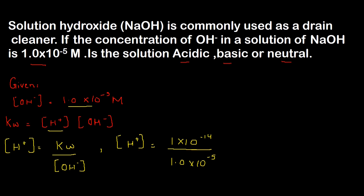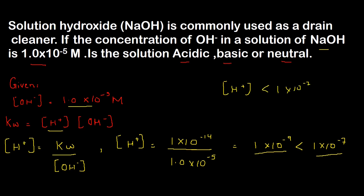Hydrogen ion ki concentration aati hai 1×10⁻⁹ molar. Yahaan par yeh value less hai as compared to 1×10⁻⁷. Sodium hydroxide ke case mein hydrogen ion ki concentration 1×10⁻⁹ hai, jo less than 1×10⁻⁷ hai. Aur hum jantay hain ki jab hydrogen ion ki concentration less than 1×10⁻⁷ hoti hai, toh yeh solution basic solution hota hai. So sodium hydroxide humare paas basic solution kehlata hai.